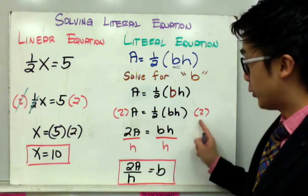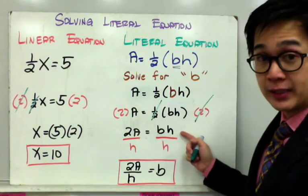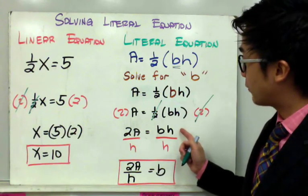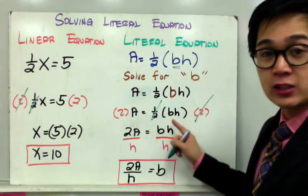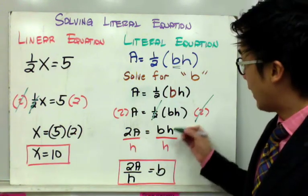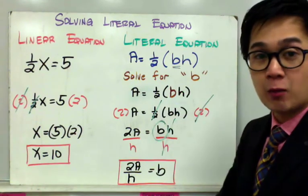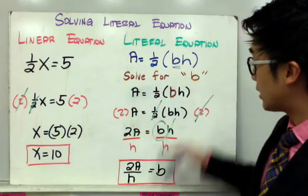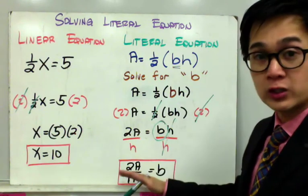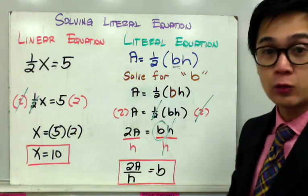To get rid of the fraction one half, multiply both sides by 2, which eliminates one half, leaving B and H. Now you have 2A equals B times H. The next step is to get rid of H by dividing both sides by H. By doing so, we are now isolating B, so B is by itself, and we have solved the equation: B equals 2A all over H. You cannot further simplify this, so the answer is 2A all over H.